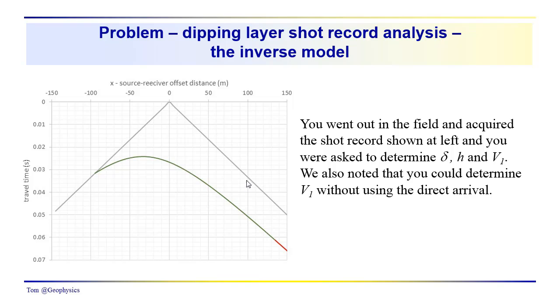You were assuming that you didn't have the direct arrival here, but you could certainly use this direct arrival data to confirm your findings. You can see that we have a delta T here of 0.05 and a distance of 150 meters. So you should be able to determine V1 and then compare that to what you get from the analysis of the data.